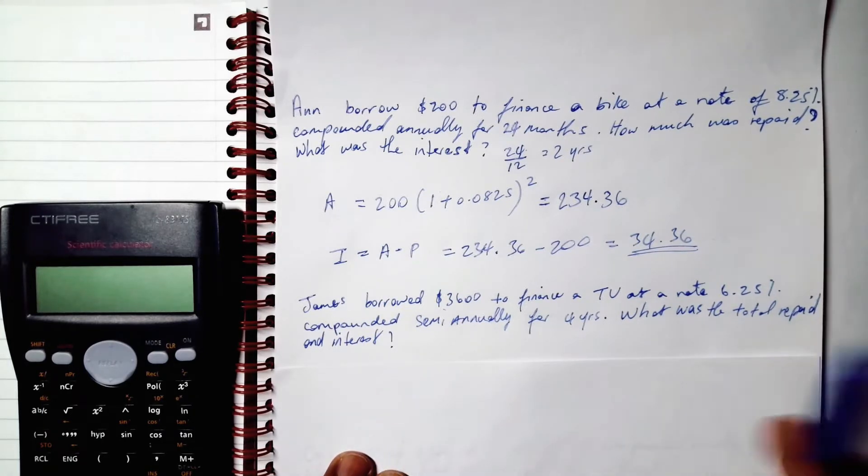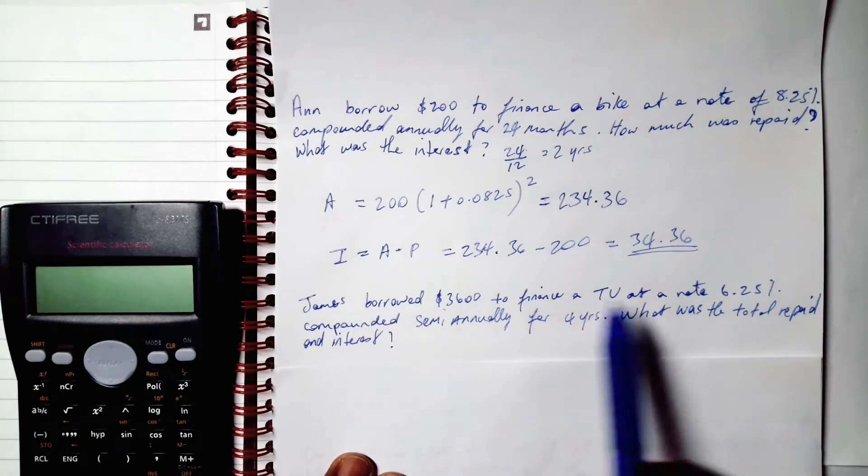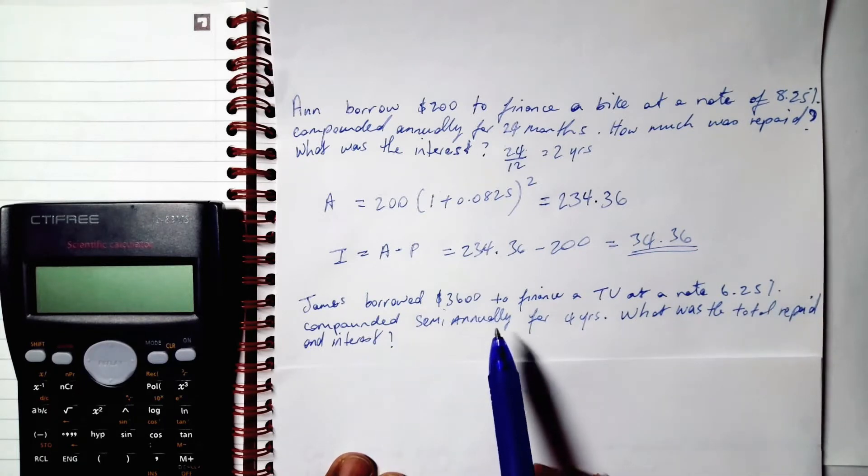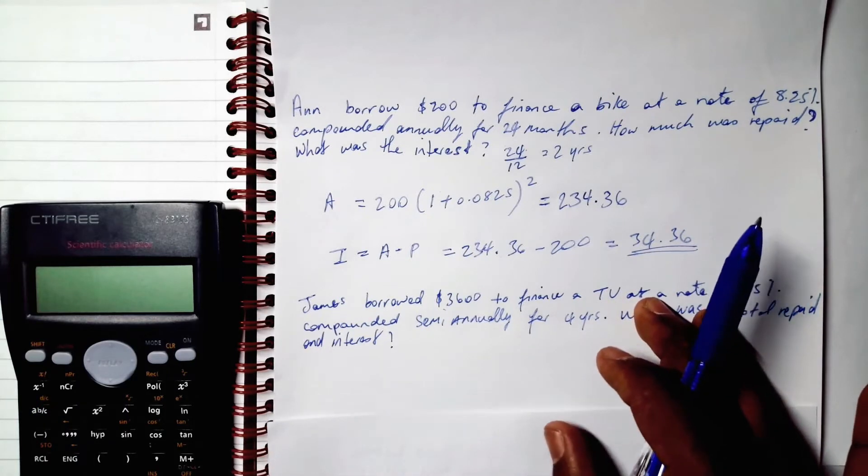What was the total repaid and interest? That's the easy part. This is the interesting part: 6.25% compounded semi-annually. This is where our n comes into play.